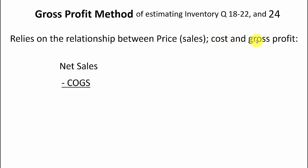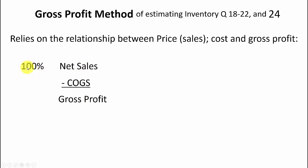Net sales — and it's got to be net sales — minus cost of goods sold equals gross profit. Net sales always equals 100% when expressing this in percentages. For example, if you were given a gross profit percentage of 31%, you should automatically know that the cost of goods sold is going to be the difference, so it would be 69%.